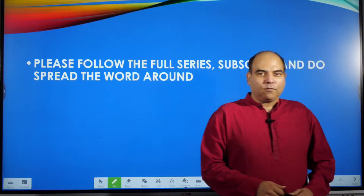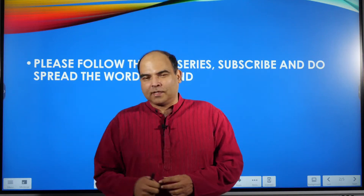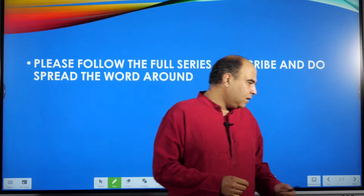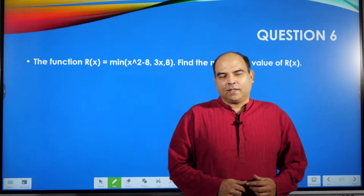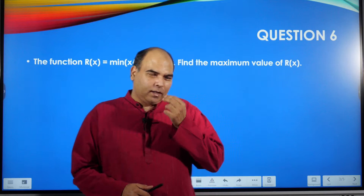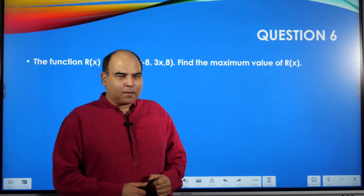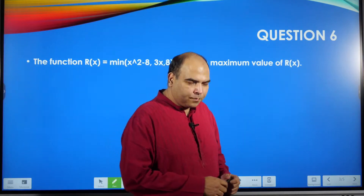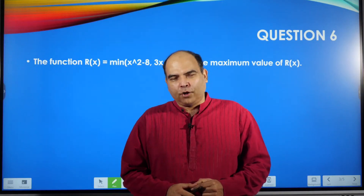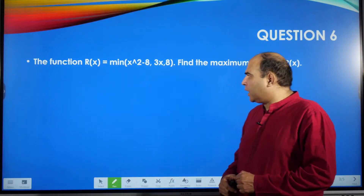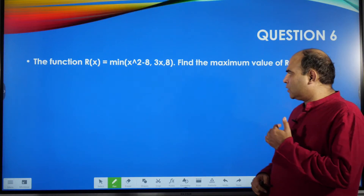I hope you enjoyed the verbal ability question which Meenakshi Ma'am had brought in today. She is also going to be here for the Tuesday, Thursday, Saturday delivery of this series, at least till we complete these numbers. So, interesting question today. This is from the QA4CAD book, specifically from LOD2 — I think question 54 in the current edition. The question talks about the function R(x) equal to the minimum of x² minus 8, 3x, and 8.